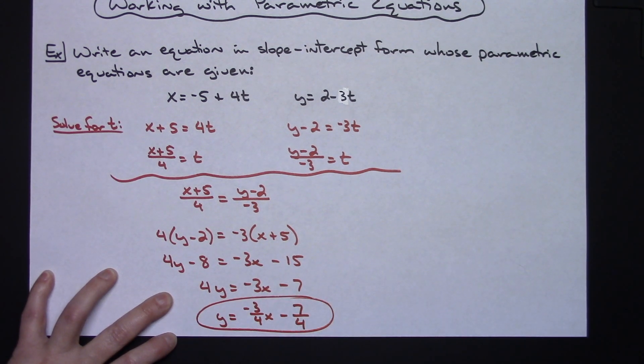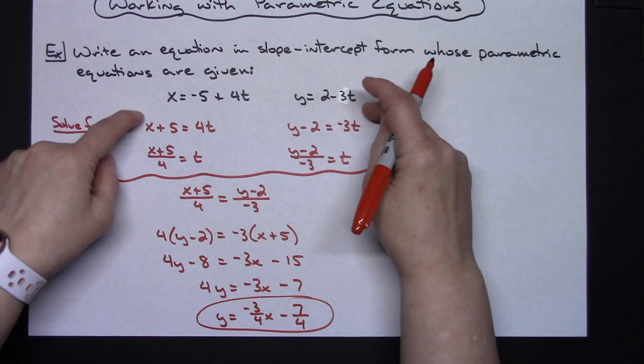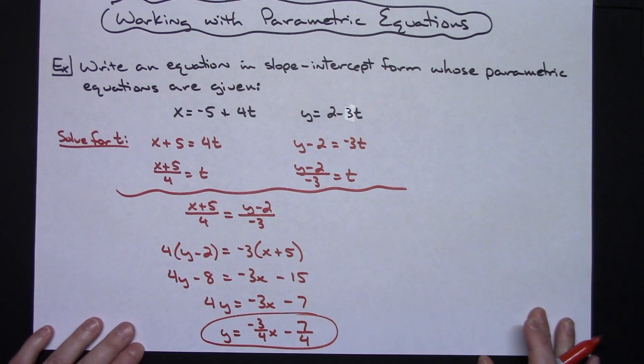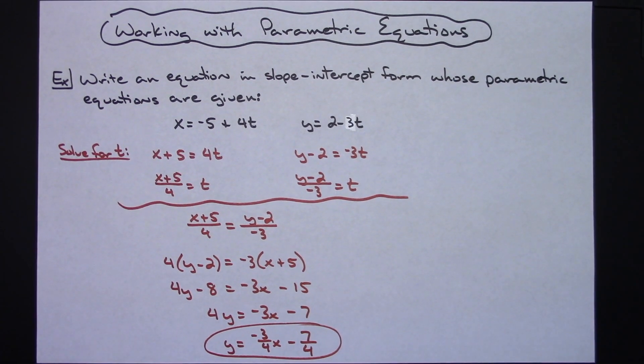And I now have an equation in slope-intercept form whose original parametric equations were given. So really just one straightforward example of dealing with parametric equations.